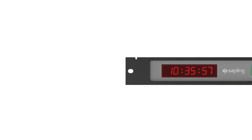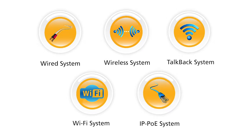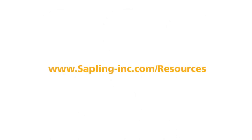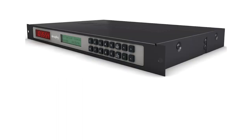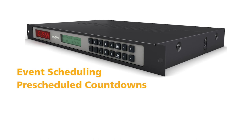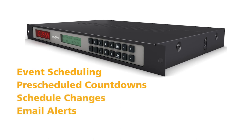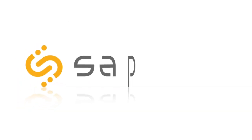Depending on the clock system you selected, you may need to configure your MasterClock to synchronize the secondary clocks in your system. Please consult your MasterClock's manual for these additional mandatory settings. For instructions about configuring common optional settings, such as event scheduling, please review the Sapling MasterClock Advanced Programming video. If you have any questions, please contact your dedicated Sapling representative. Thank you.